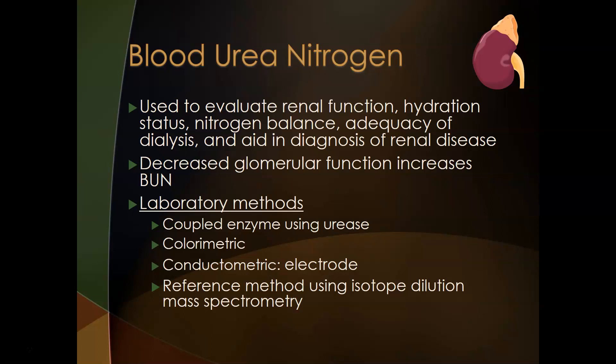Nitrogen balance is important because the blood urea nitrogen level is intimately connected to protein level. Positive nitrogen balance means more protein is coming in than going out — you might be building muscle. Negative nitrogen balance means you're wasting, using up more than you're taking in. A decreased glomerular function will increase BUN because the waste product cannot leave through the kidneys, so it accumulates in the blood.